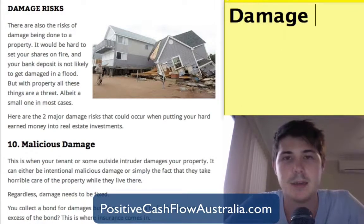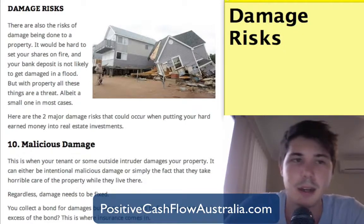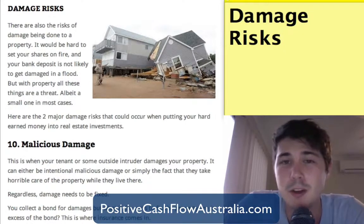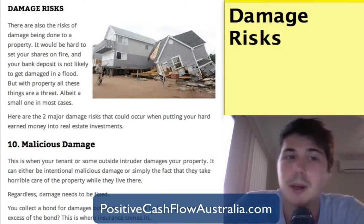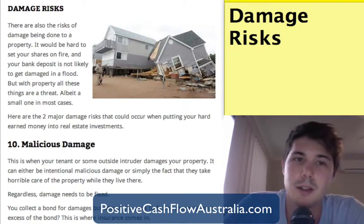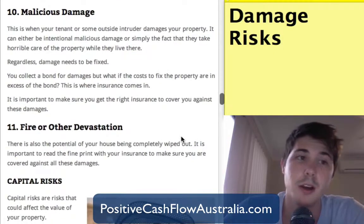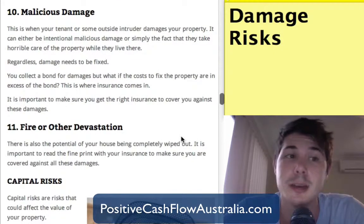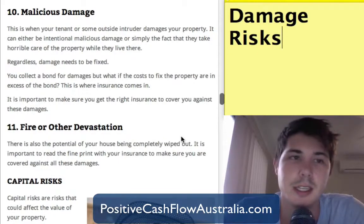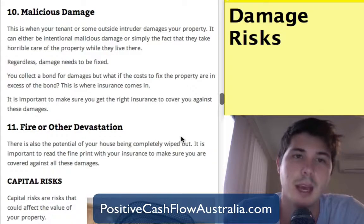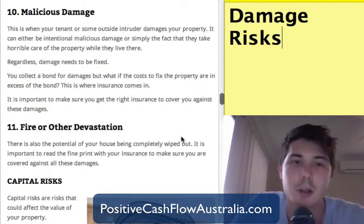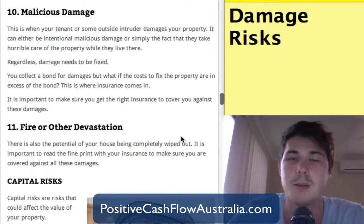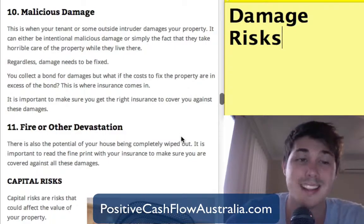After cash flow risks, we look at damage risks — risks of damage being done to the property. It's going to be hard to set your shares on fire, and your bank deposit isn't likely to get damaged in a flood, but with property all these things are possible. Number ten is malicious damage, when your tenant or an outside intruder decides to damage your property, intentionally or unintentionally. The damage needs to be fixed — you've got a bond, but it might cost more than the bond, and that's where insurance comes in.